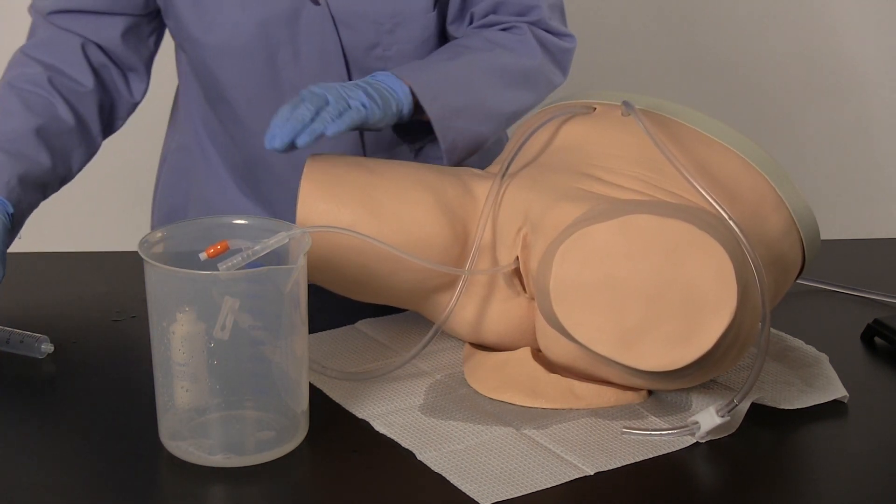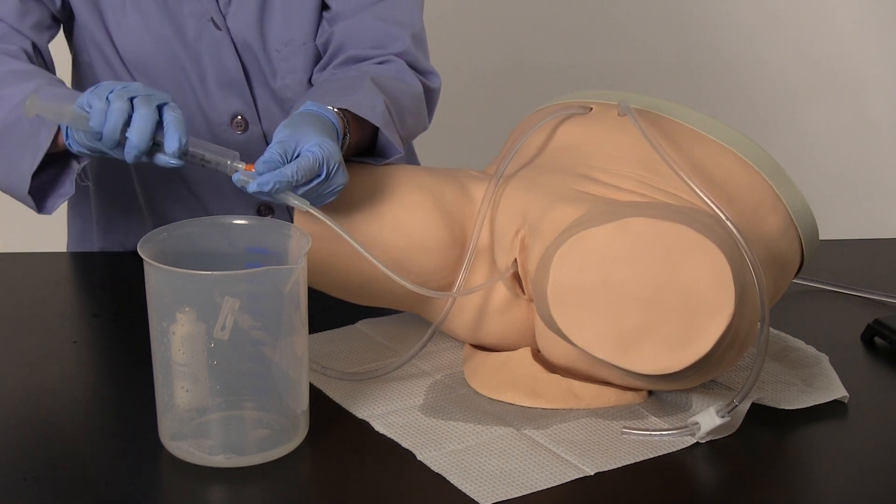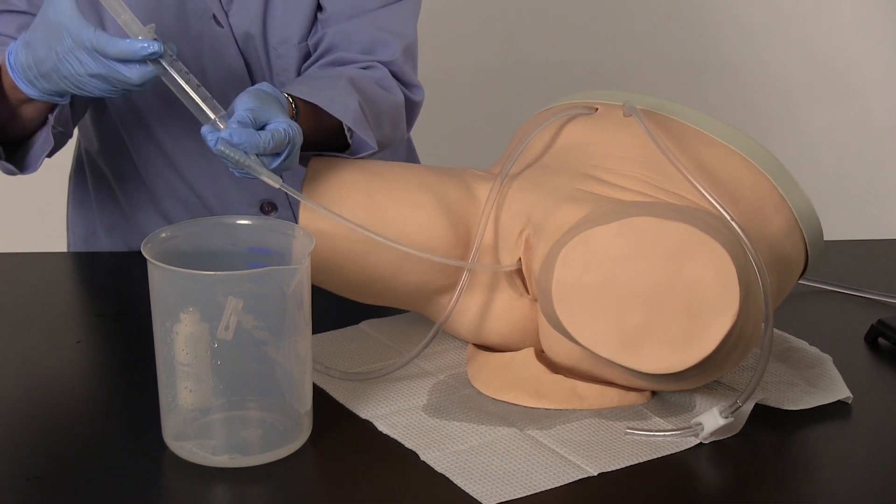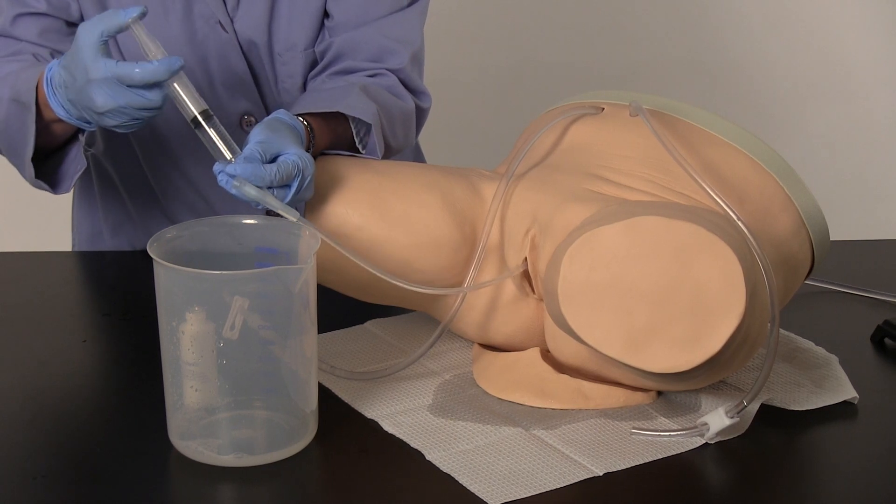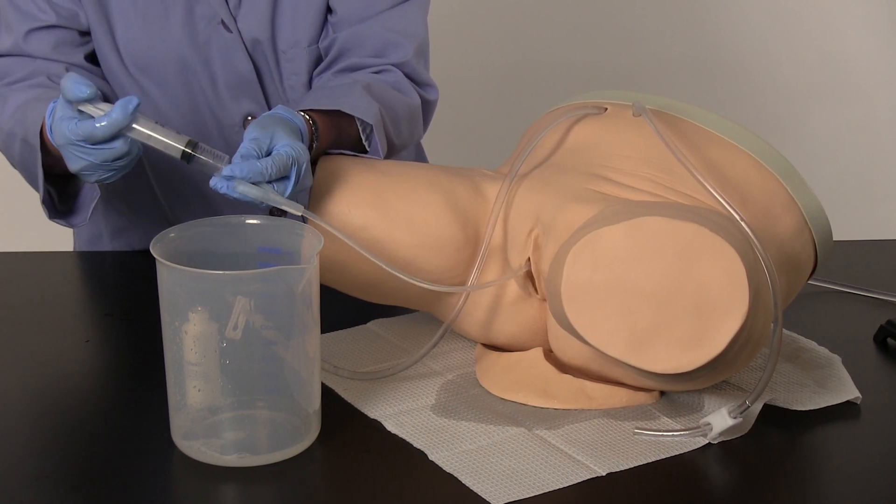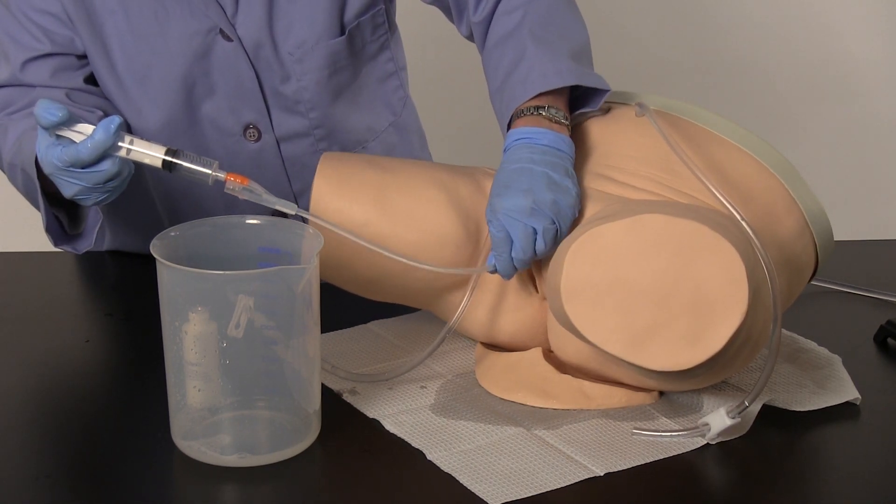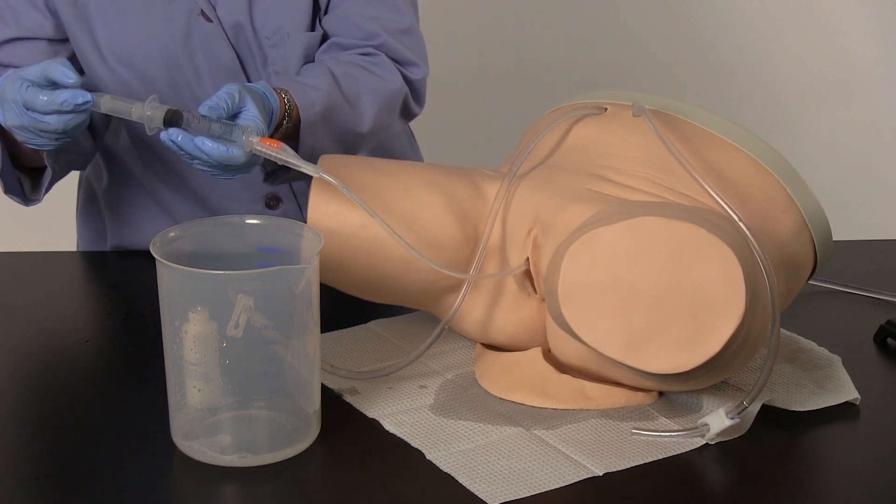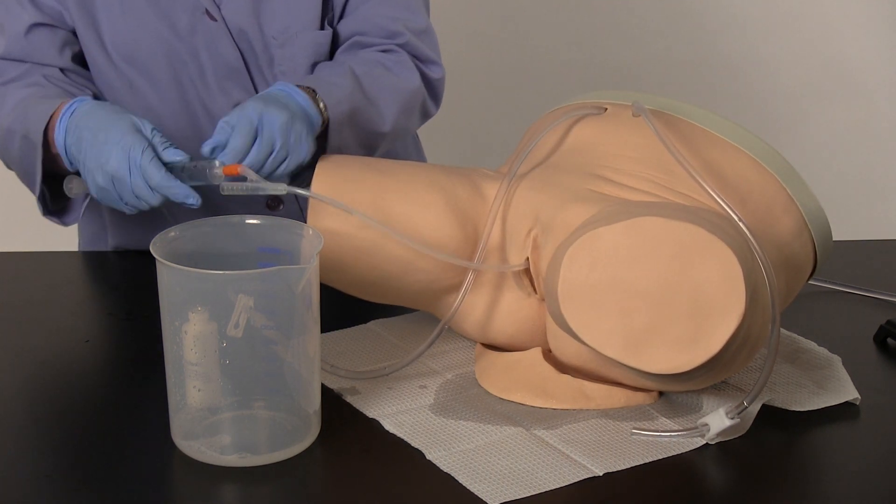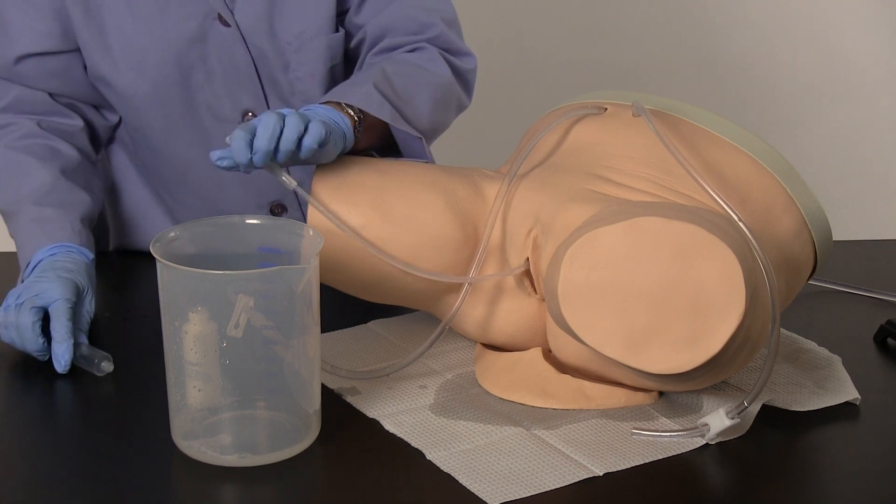Connect the 20cc syringe to the threaded end of the catheter, ensuring the syringe is pulled back and filled with air. Depress approximately 10cc of air into the catheter to fill the cuff. Gently tug on the catheter to determine proper inflation. Pull back on the syringe, completely deflating the cuff before removing the catheter.